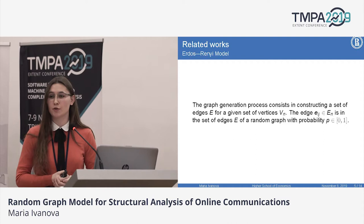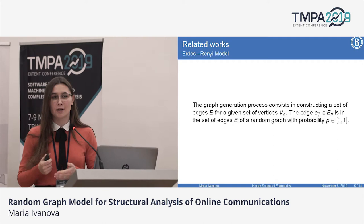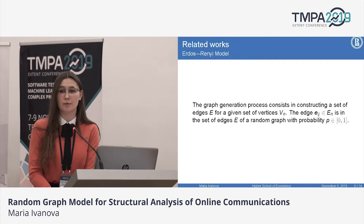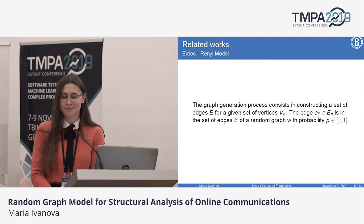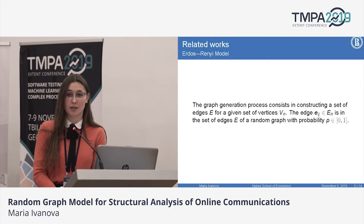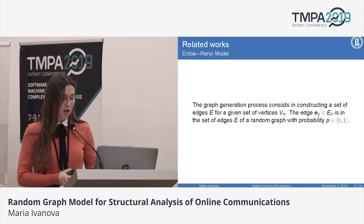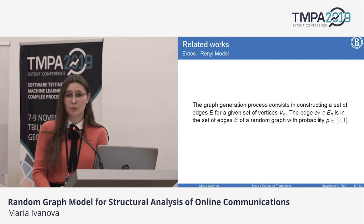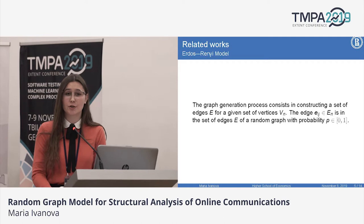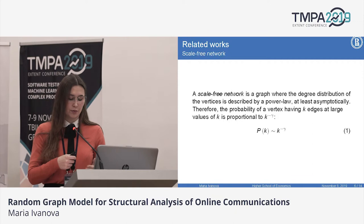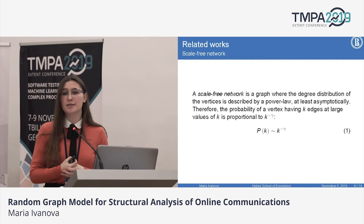Let's discuss its key features. First, the number of vertices is selected. Then you have to specify the set of edges, and for this purpose a series of experiments is carried out with a random variable having a Bernoulli distribution. They determine whether an edge will be present in our graph. But according to the latest studies by Mislov and Wilson, large social networks have a power law degree distribution of vertices, and graphs of this type are also called scale-free networks.